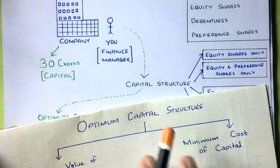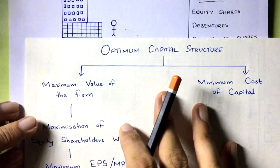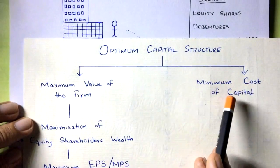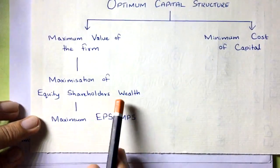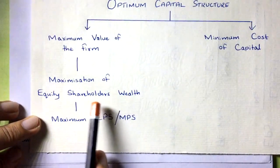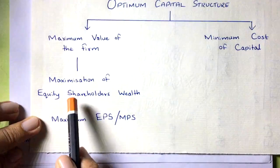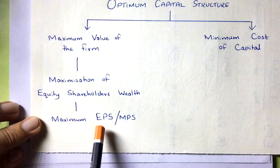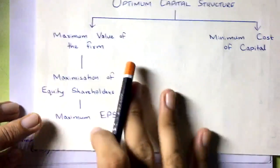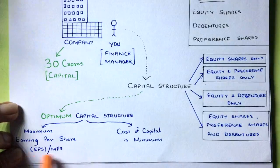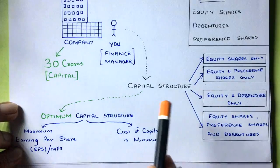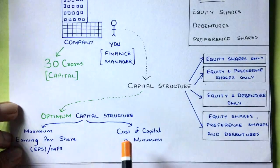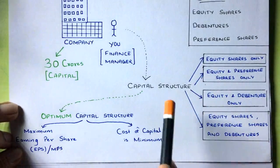To choose the optimum capital structure, you need to select the option which has the minimum cost of capital and the maximum value of the firm — which means maximization of equity shareholders' wealth. That is the primary objective of financial management. The option which gives the maximum earning per share — the highest EPS — is the option you should choose as your company's capital structure.